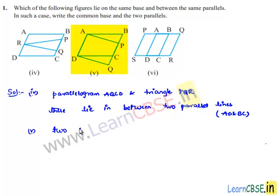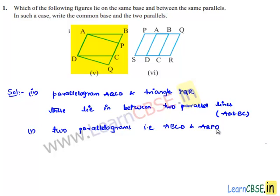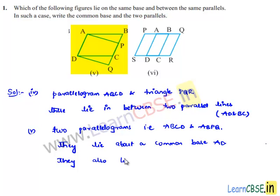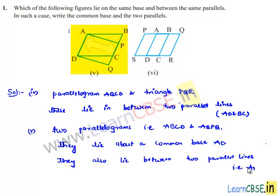Moving on to the fifth bit — we have two parallelograms: ABCD and ABPQ. They lie on a common base AD and also between two parallel lines AD and BQ.